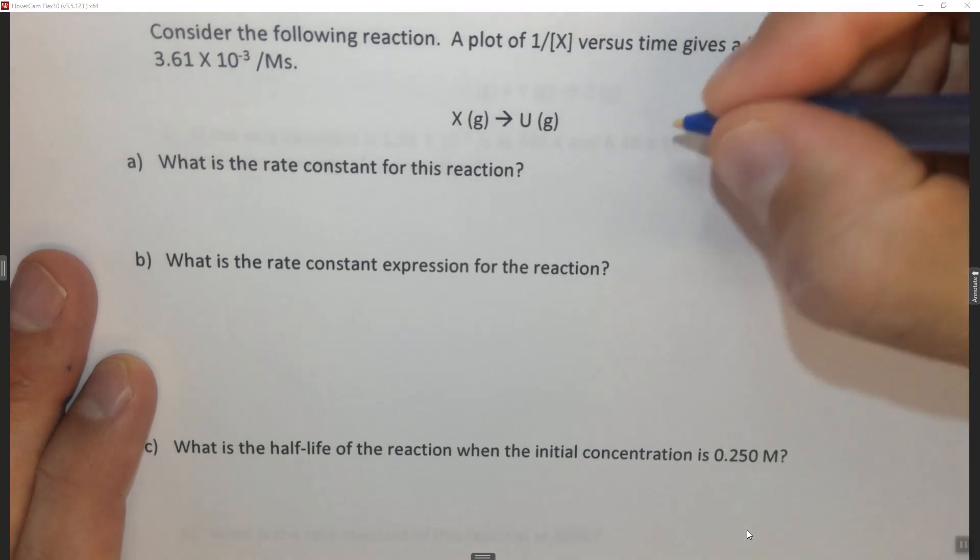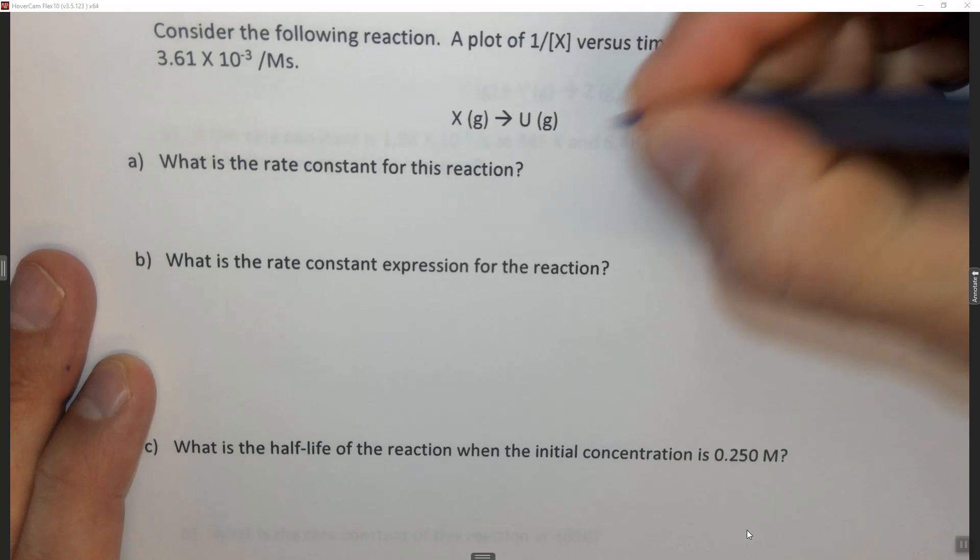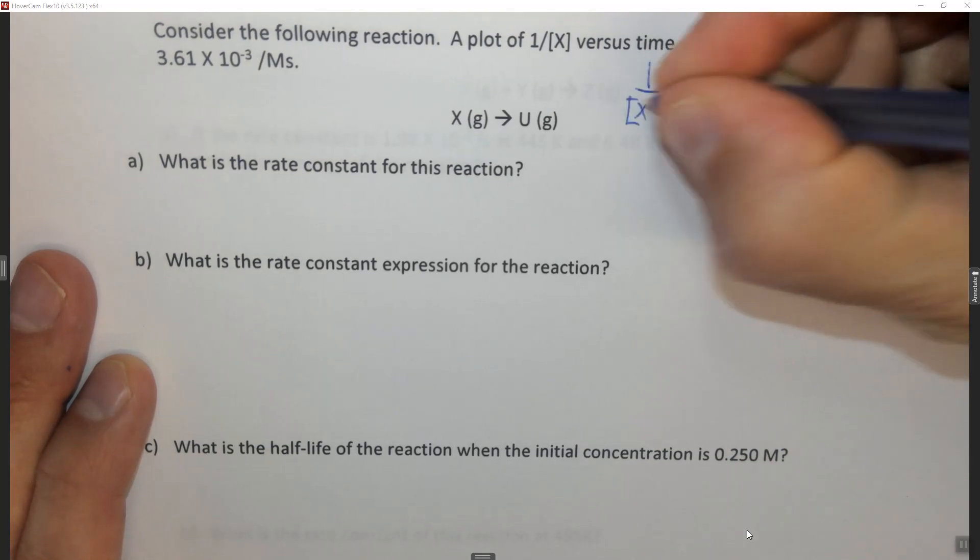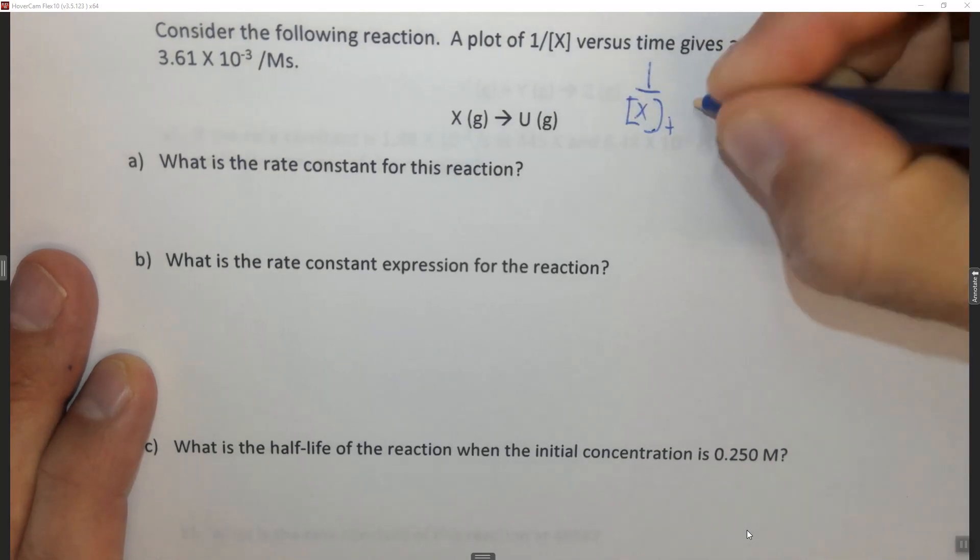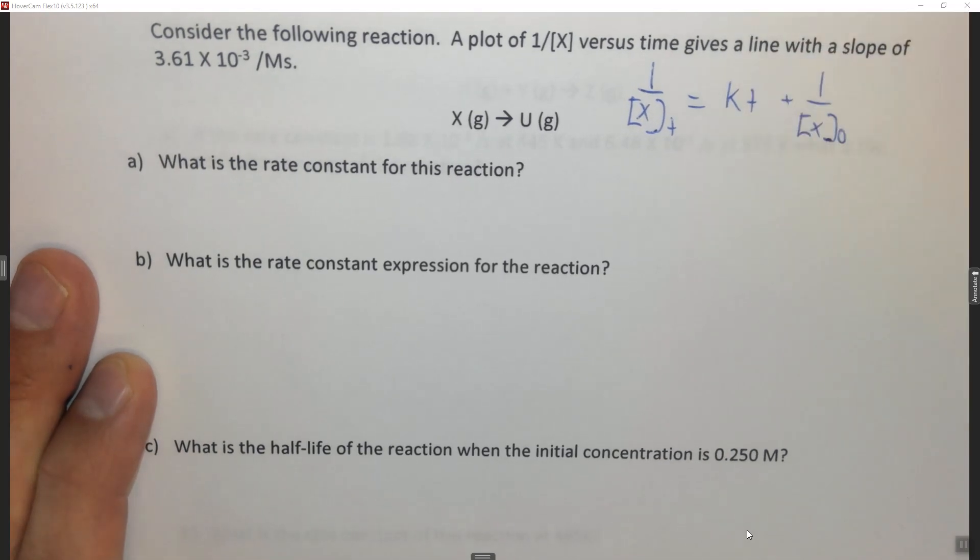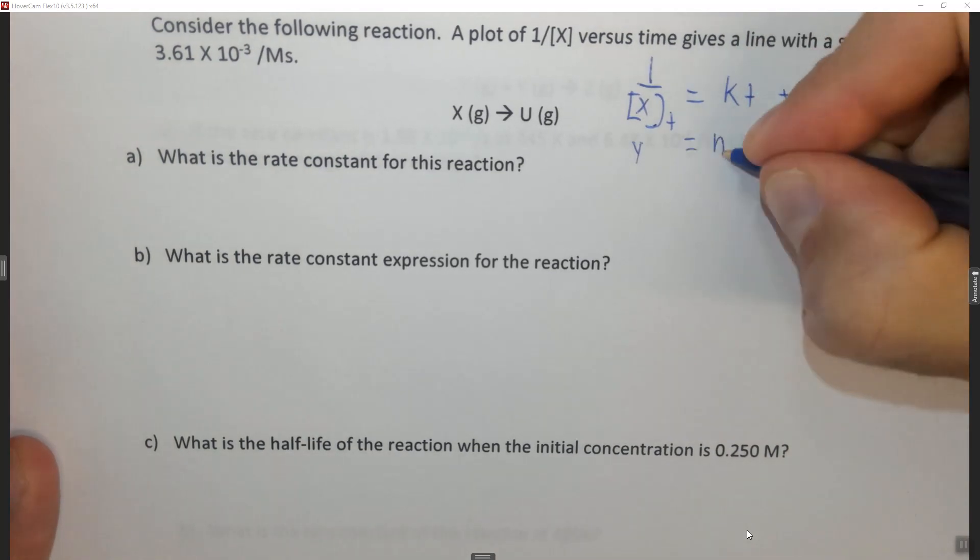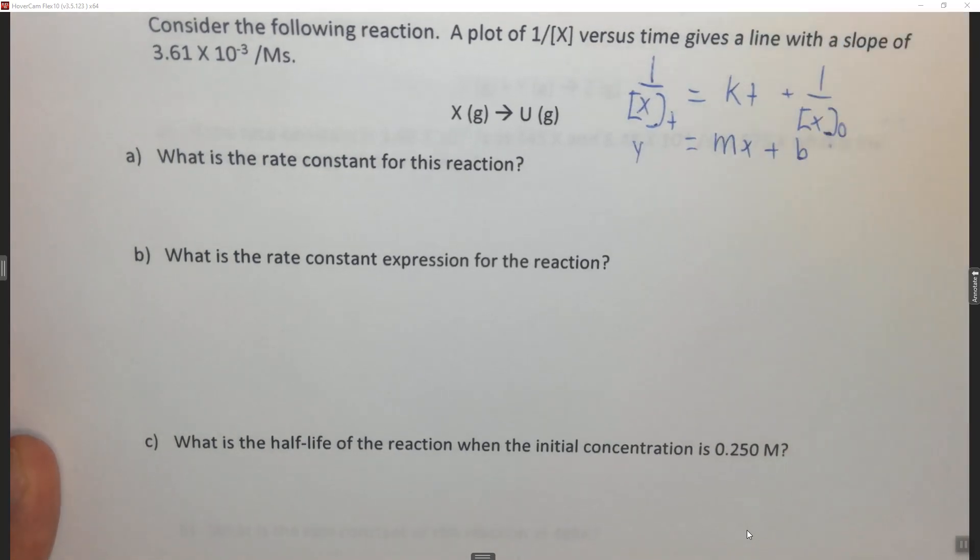So if we look here at the integrated second-order rate law, it tells us that 1 over, in this case X at some t, equals kt plus 1 over the concentration X initially. So if we look at this as y = mx + b, if we get a straight line here when we graph 1 over a concentration of X at some t for y at time as the x variable...